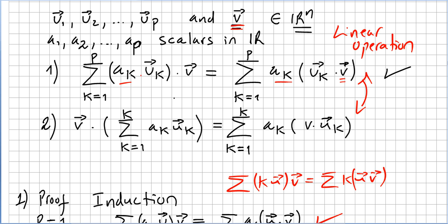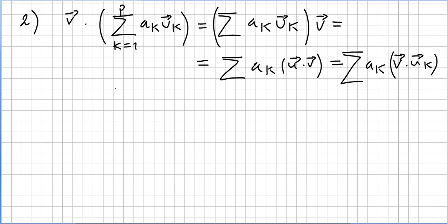We now move immediately to the proof of the second property. This one is going to be really easy, because it's only a matter of using the commutativity of the dot product. So to prove the second one, we just need to use this simple fact that we already proved, and also using property 1. So what is v dotted with the sum from k equals 1 to p of ak·uk? We can treat this sum as a single vector u.